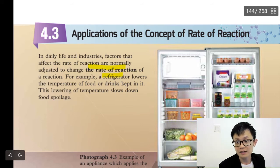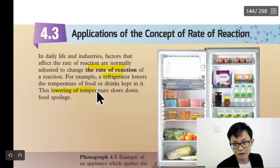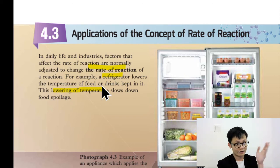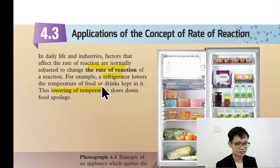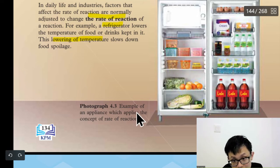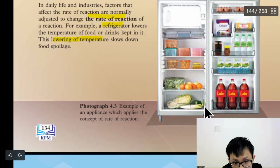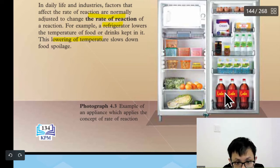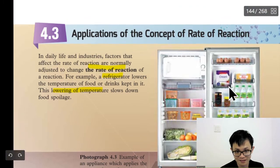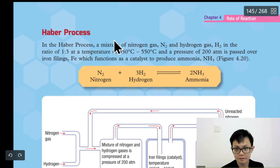So when we want to slow down a reaction — the application in life is to lower the temperature. We already learned that high temperature means fast reaction, low temperature means slow reaction. So we lower the temperature to decrease the rate of reaction, like in a refrigerator, or even to preserve a body. That's the concept of application of rate of reaction in daily life.